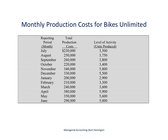Using the regression analysis approach, we would take data like you see here. This is the monthly production costs for a company that produces mountain bikes — we call the company Bikes Unlimited. This monthly production cost information also provides the level of activity, measured by units produced. For July, for example, the company had total production costs of $230,000 at a production level of 3,500 units.